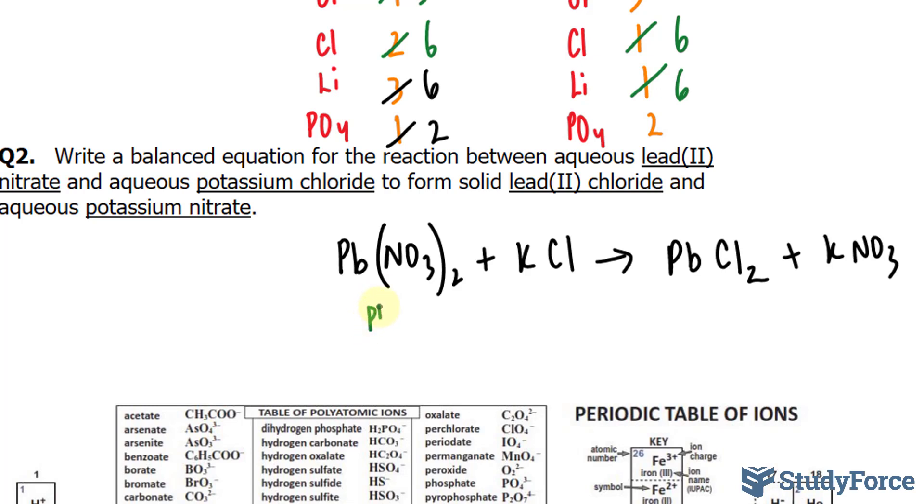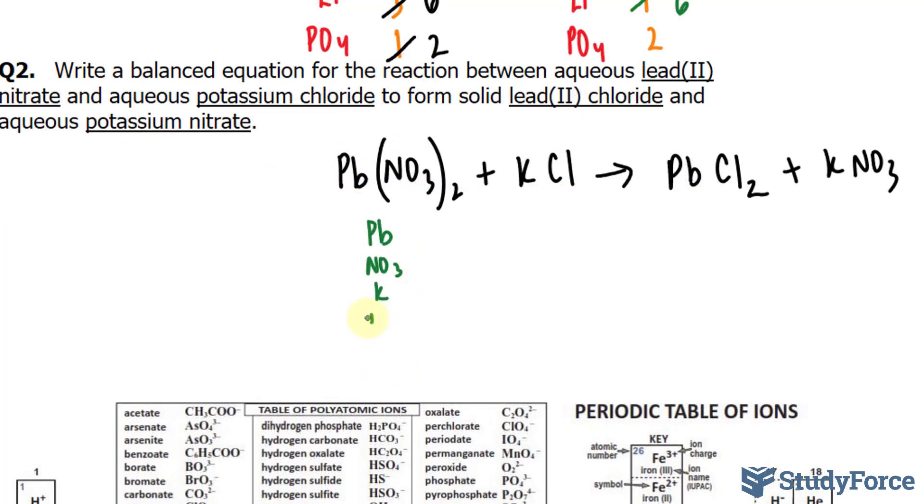So we have Pb, NO3, K, and Cl, the same on the right side: Pb, NO3, K, and Cl.